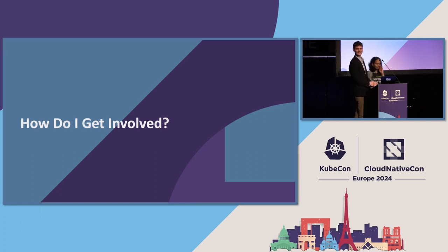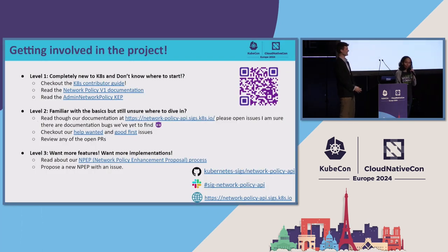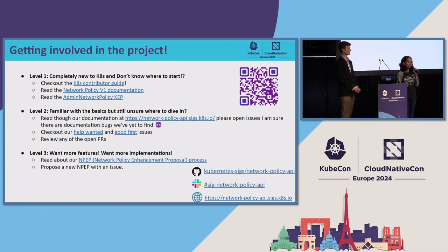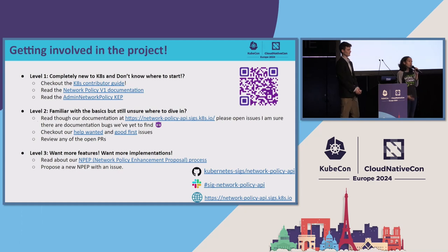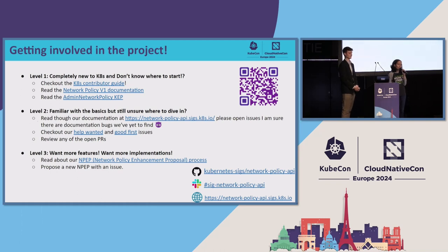That was a cool demo. We're at the end of the presentation. If you want to get involved in the project, please reach out — we are here at KubeCon and also on Slack at the SIG network policy API Slack channel on Kubernetes. Check out our website and code base. We need help with lots of issues: conformance profiles, testing, all the NPEPs, new features, and the policy assistant. We're always short on developers, contributors, and even non-code contributions like giving feedback on how these APIs work. Thank you everyone for coming to our talk.